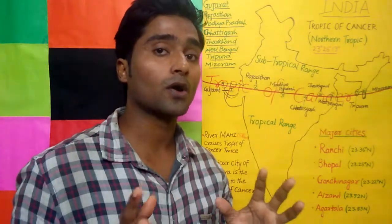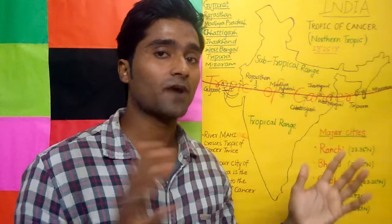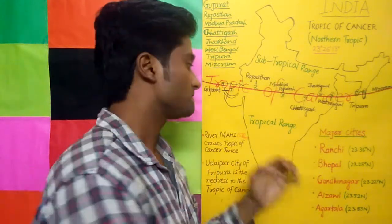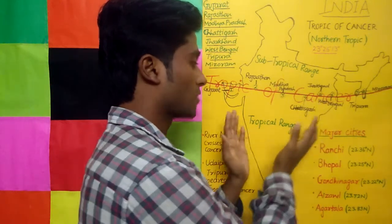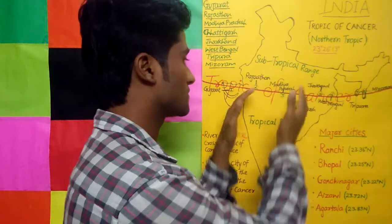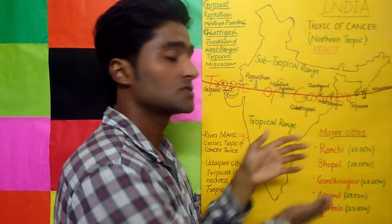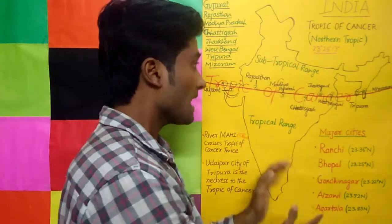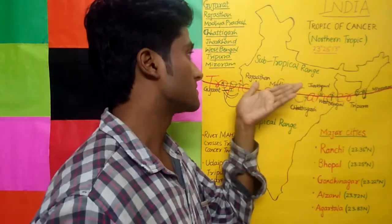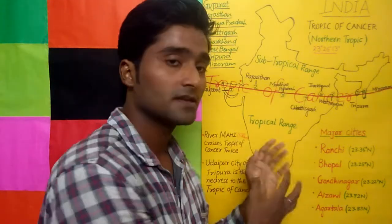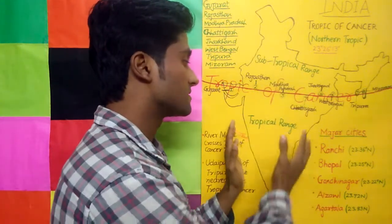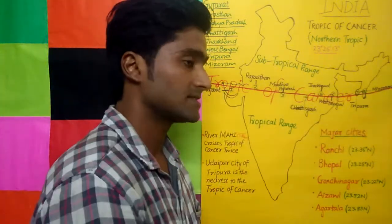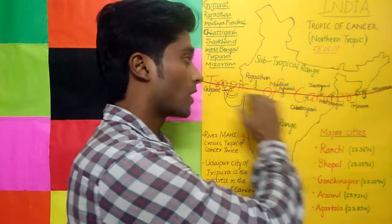That is why in North India you find cold weather from November to March with low temperatures. In the tropical range, you find hot and humid climate, especially in the coastal regions. The tropical range extends from the equator to the Tropic of Cancer, covering most of South India, where it is hot throughout the year.